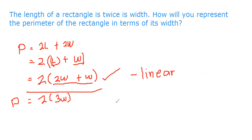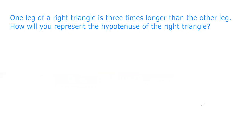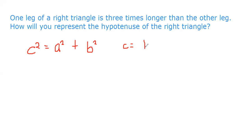Another example: one leg of a right triangle is 3 times longer than the other leg. How will you represent the hypotenuse of the right triangle? We're dealing with a right triangle and we need the hypotenuse, so we use the Pythagorean theorem.